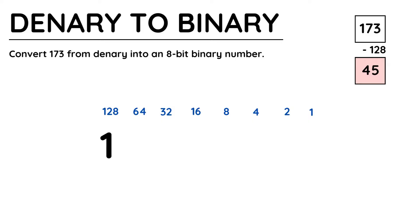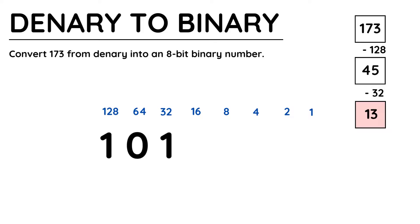Now I move on to the next number which is 64 and I compare that to 45. 64 does not go into 45 as it is too large, so I write 0. Nothing has changed so I'm still referring to 45 as I look at the next number, which is 32, and 32 does fit inside 45. So I write 1 underneath the 32 and now I need to take it away from 45, which makes my new denary number 13.